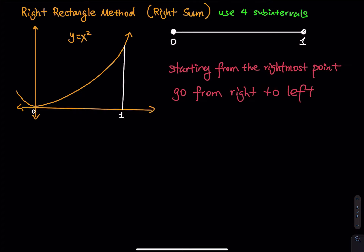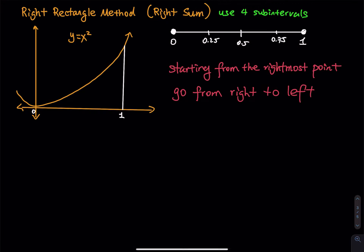From 0 to 1, we need to cut this into 4 pieces. I cut right in the middle, so that is 0.5, and then half of 0.5 is 0.25, and then 0.75. So this is 1 over 4, 2 over 4, and then 3 over 4. For the right rectangle method, you go from right to left, starting all the way on the right.